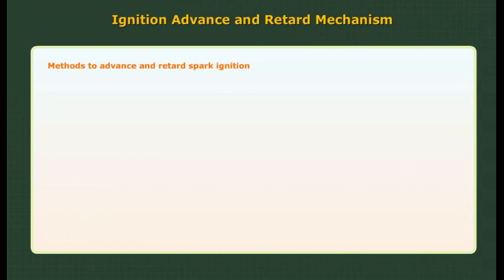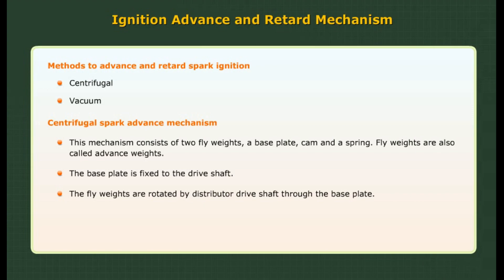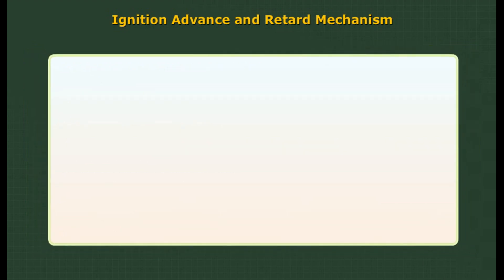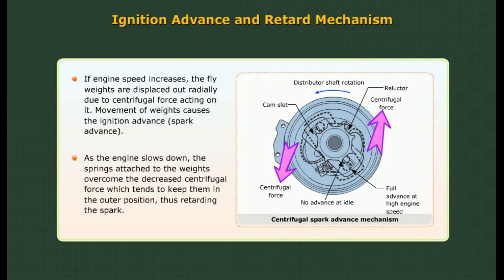Methods to advance and retard spark ignition: centrifugal spark advance mechanism and vacuum spark advance mechanism. Centrifugal spark advance mechanism consists of two flyweights, a base plate, cam, and spring. The flyweights, also called advance weights, are rotated by the distributor drive shaft through the base plate. The weights are pivoted on the base plate and attached to the cam with springs. When engine speed increases, the flyweights are displaced radially outward due to centrifugal force, causing ignition advance. As the engine slows down, the springs overcome the decreased centrifugal force, thus retarding the spark.